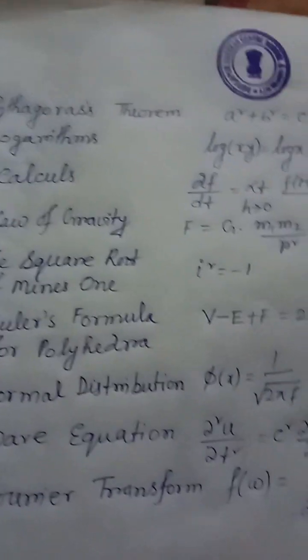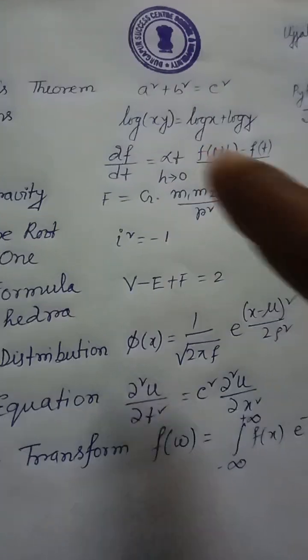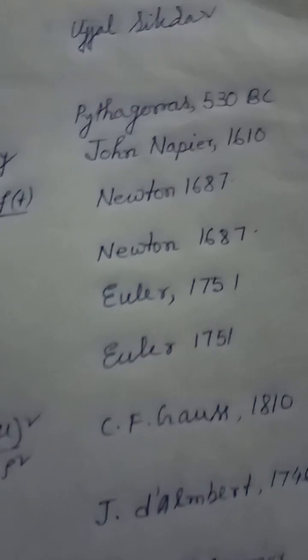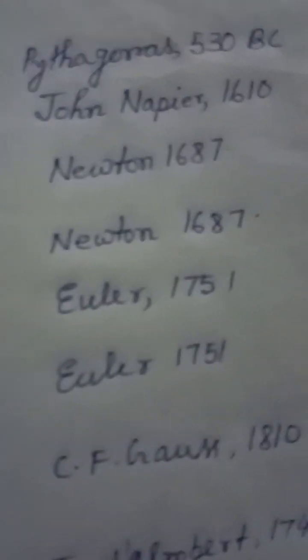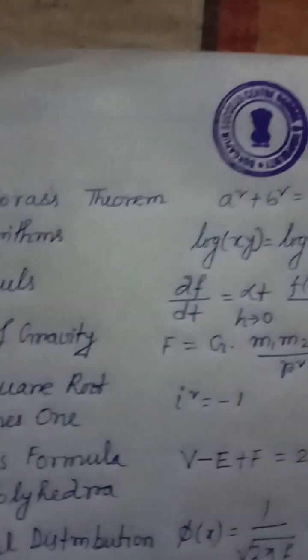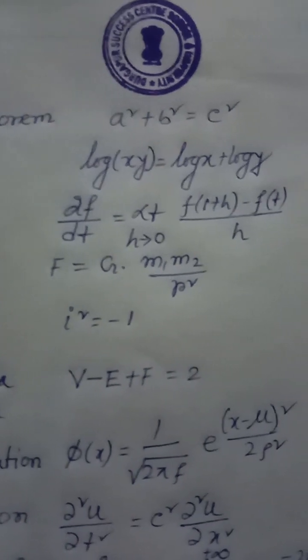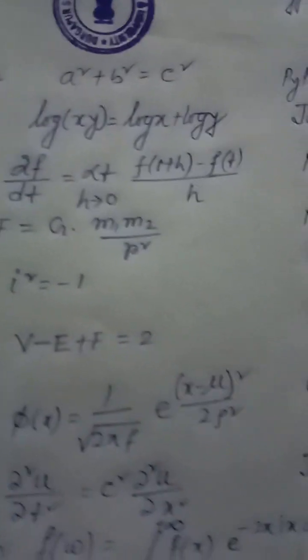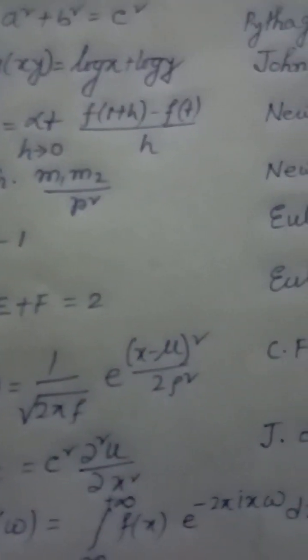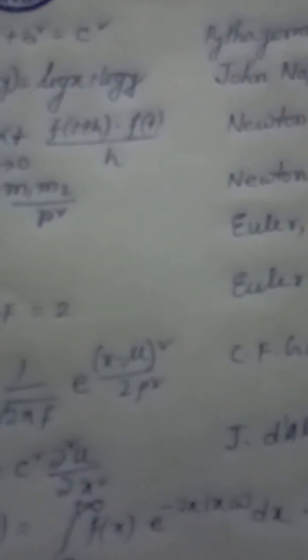Equation 1 — Pythagoras theorem: A² + B² = C². Pythagoras, 530 B.C. Equation 2 — Logarithm equation: log(X·Y) = log X + log Y.